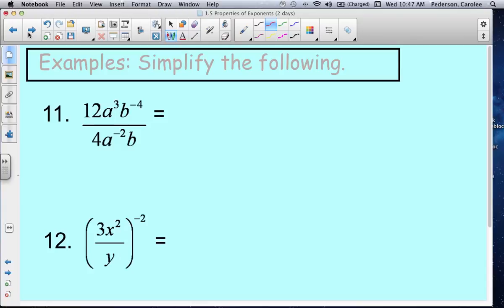So what I tend to do with these problems is I want to clean up any of those negative exponents. So I'm going to bring this b to the negative 4th down to the denominator, and I'm going to bring that a to the negative 2 up to the numerator.